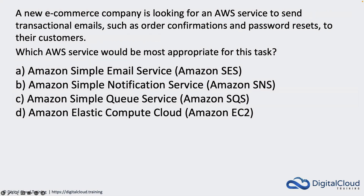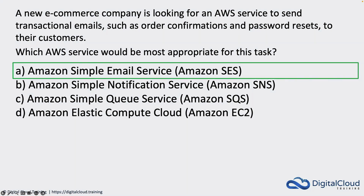A new e-commerce company is looking for an AWS service to send transactional emails such as order confirmations and password resets to their customers. Which service would be most appropriate? The first two answers — SES and SNS — can both be used to send email. Simple Queue Service is more of a message bus for building decoupled applications, not used for sending emails. EC2 could host a mail server but isn't used for sending email directly. SNS can send emails, but the key word here is 'transactional.' Transactional emails are sent by Simple Email Service — that's the correct use case.